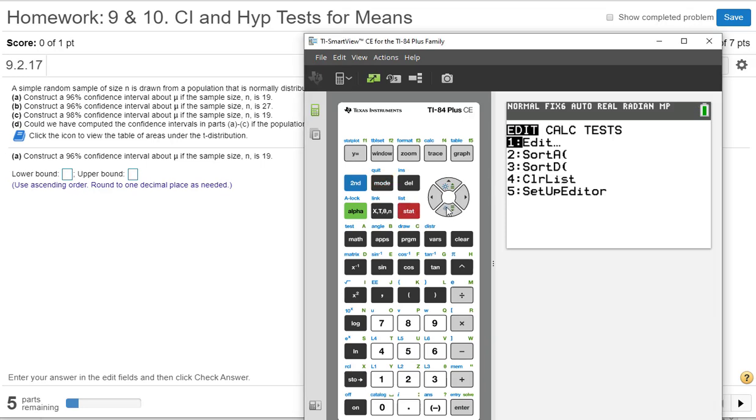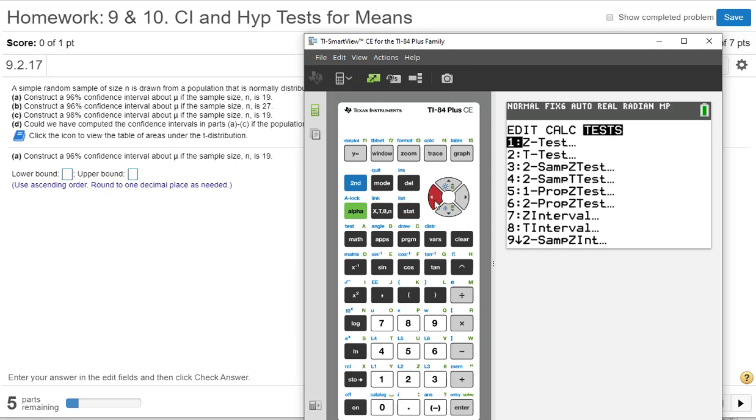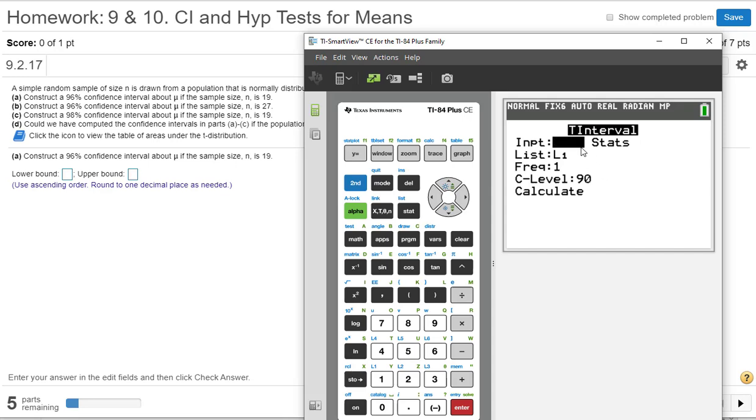So in TI, press STAT. We're talking about means, so we're going to be looking at a T interval. Not a T test, we'll do that later - T interval number eight. So you have a choice here, it's either the data or stats. If you have the raw data, you're going to select data. I did not put anything into list one, so it's got to be stats. I'm given the summary statistics.